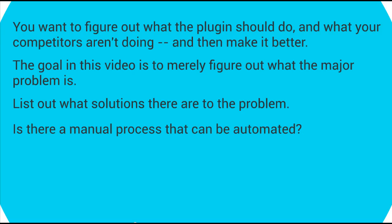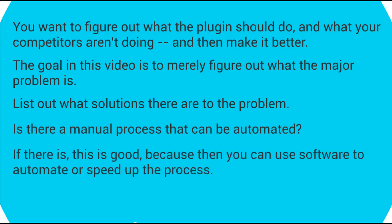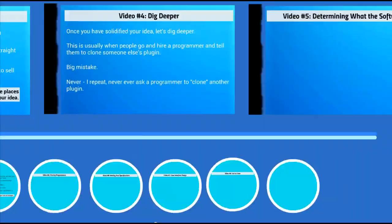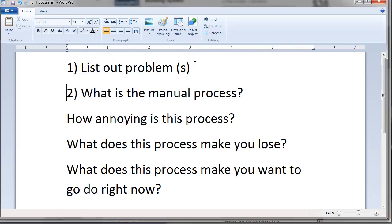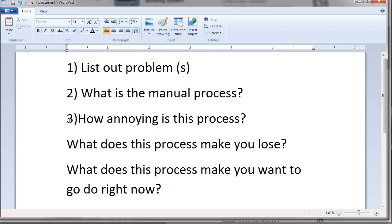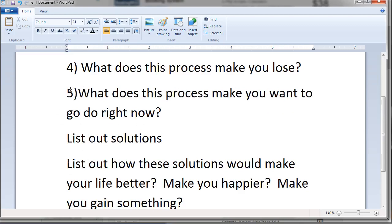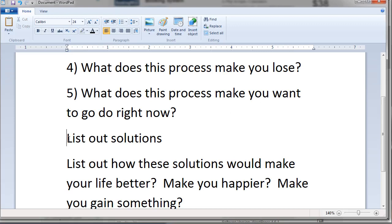Another thing to consider: if there is a process, that's great, because you know you can automate or speed it up using a WordPress plugin. So let's dig deeper and look at an example. Homework time: pull out WordPad or your favorite word processor and type these out. Number one: list out the problem. Number two: what is the manual process? Number three: how annoying is this process? Number four: what does this process make you lose?